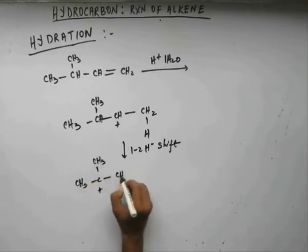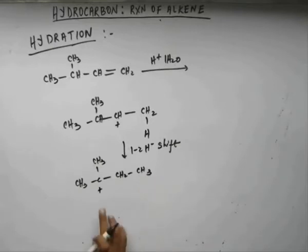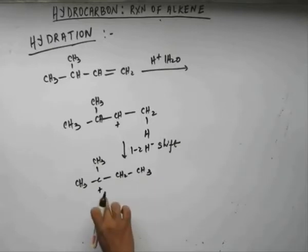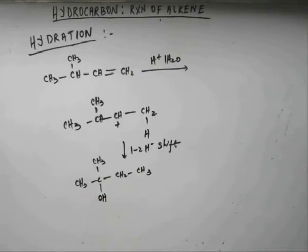So there will be rearrangement. Water will come, form a bond, and there will be removal of H+. Finally our OH group will get attached to that carbon. So we get a 3° alcohol. As I told you, if there is a possibility of rearrangement, there will be rearrangement. We always have to be keenly looking for the possibility of rearrangement.